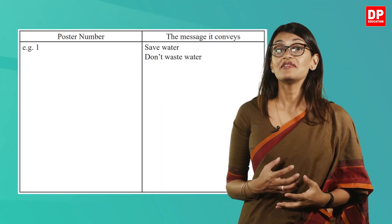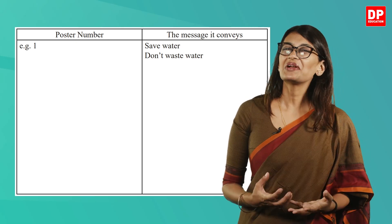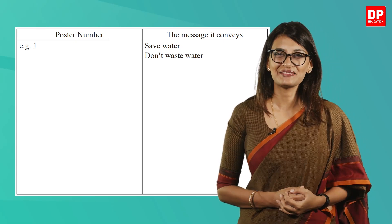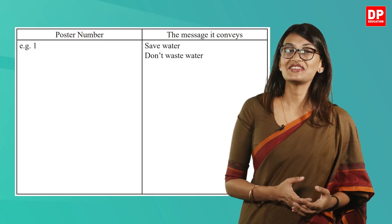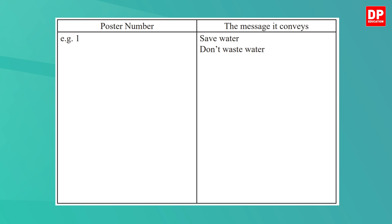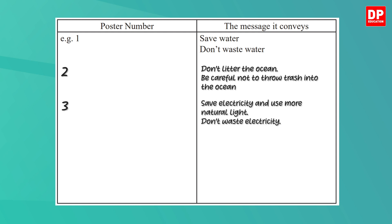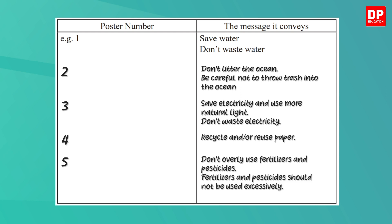Below these posters, you have a table to fill in. The first one has already been done for you. Let's do the rest together. The table has two columns: the poster number and the message it conveys. Poster 1: Save water — don't waste water. Poster 2: Don't litter the ocean — be careful not to throw trash into the ocean. Poster 3: Save electricity and use more natural light — don't waste electricity. Poster 4: Recycle and reuse paper. Poster 5: Don't overly use fertilizers and pesticides — they should not be used excessively.